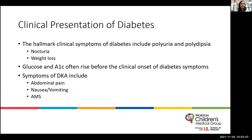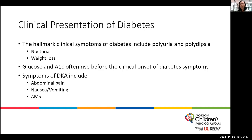Symptoms of DKA include abdominal pain, nausea, vomiting, deep breathing — which we refer to as Kussmaul respirations — and it can progress to the point of altered mentation. Quick recognition of the signs and symptoms of DKA is very important because this can be a life-threatening complication. Interestingly, glucose and A1C often rise well before the clinical onset of diabetes symptoms, so astute clinicians might be able to make a diagnosis before a child presents in DKA. If we can spare them that complication, that would be our ultimate goal.